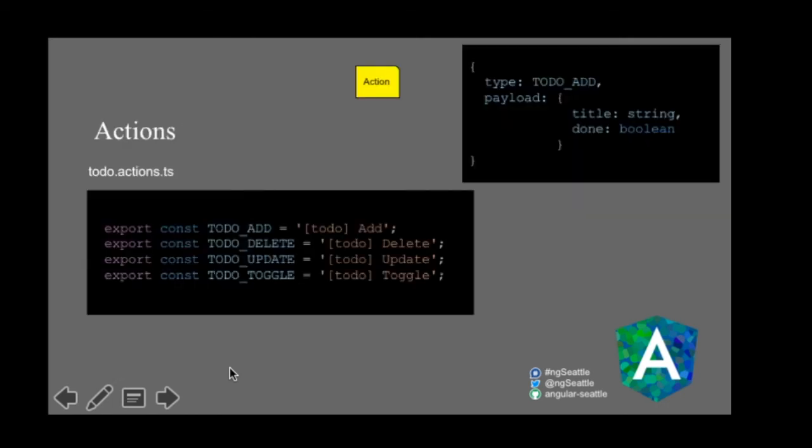Actions have a type and a payload. The type is a string constant — in our case 'TODO_ADD'. The payload contains a title and a boolean for whether it's done or not.